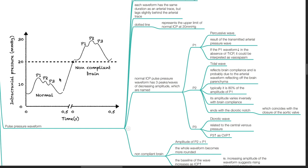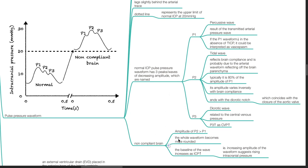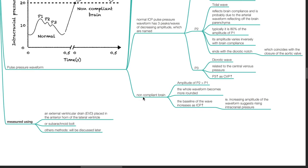P3 is known as the dicrotic wave. It is related to central venous pressure. P3 increases as CVP increases. In a non-compliant brain, the amplitude of P2 is more than P1. The whole waveform becomes more rounded. The baseline of the wave increases as ICP increases. Increasing amplitude of the waveform suggests rising intracranial pressure. ICP waveform is measured using an external ventricular drain placed in the anterior horn of the lateral ventricle or subarachnoid bulb. Other methods will be discussed later.